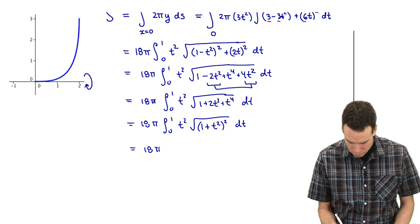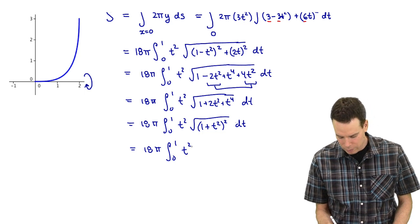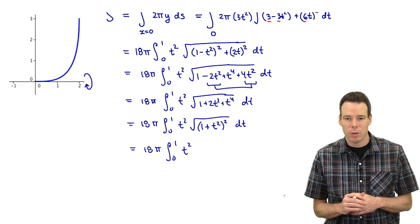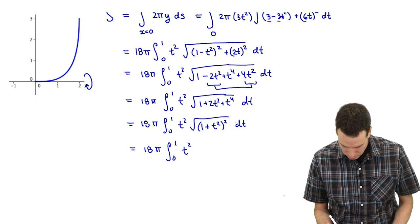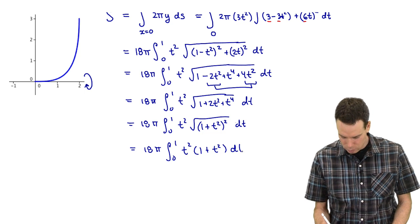And so since it's a perfect square, I can get rid of the square root of that thing squared and just replace it with 1 + t². Really I'd need to replace it with absolute value of 1 + t² but that's already a positive quantity so I can get rid of the absolute values and just leave it as 1 + t².